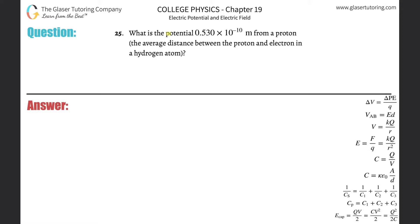Number 25: What is the potential 0.53 × 10^-10 meters from a proton? Here's your proton. What do you know about a proton? Remember, you'll always know the charge: 1.6 × 10^-19 coulombs. They want to know the voltage at a certain distance relative to that proton.